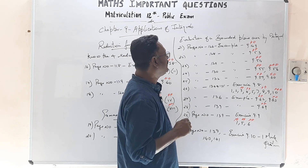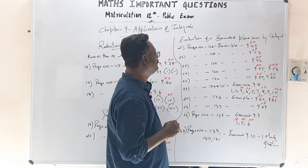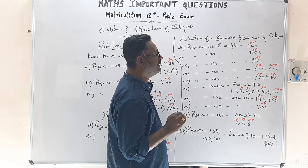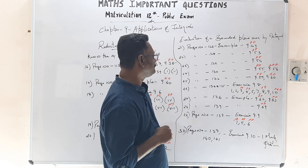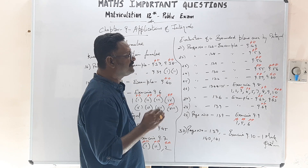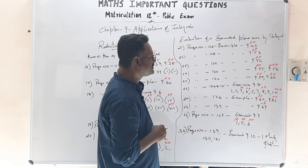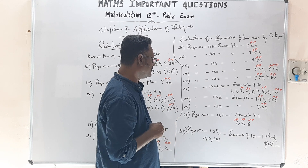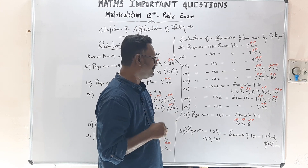At the topic Evaluation of Bounded Plane Area by Integrals: Page 126, Example 9.49. Page 128, Example 9.53. Page 129, Example 9.54. Page 130, Examples 9.55 and 9.56. Page 132, Examples 9.59 and 9.60 are very important sums. Page 134 and 135, Exercise 9.8 — 1st, 2nd, 3rd, 4th, 5th, 7th, 8th, 9th, and 10th are important sums. Page 136, Examples 9.62 and 9.63. Page 139, Example 9.69 are important sums. Page 139, Exercise 9.9 — 1st, 5th, and 6th sums are very important.